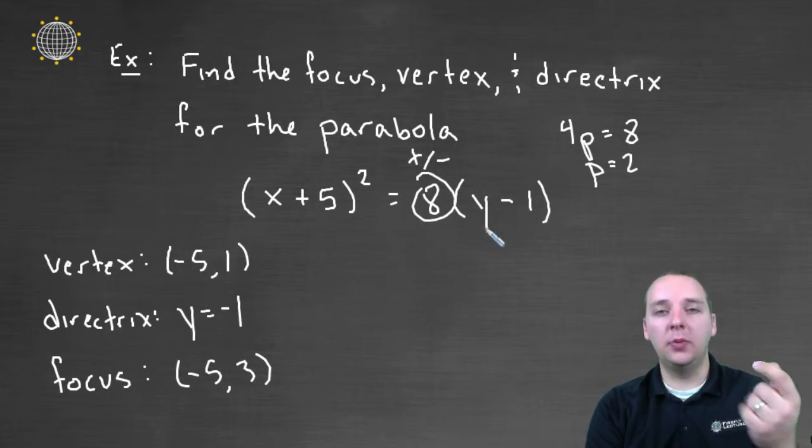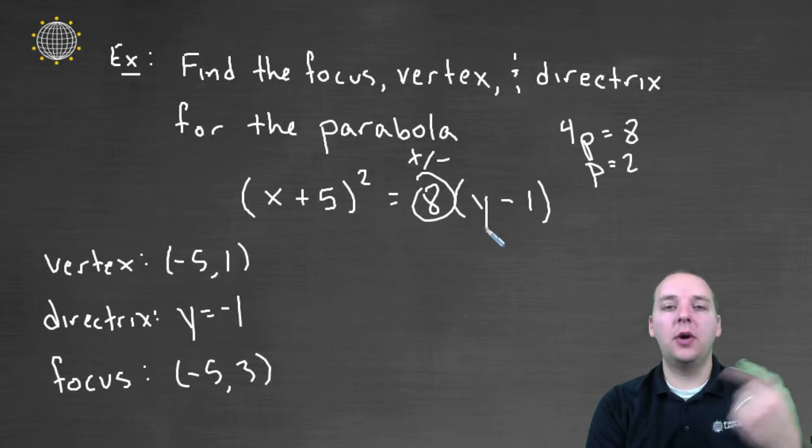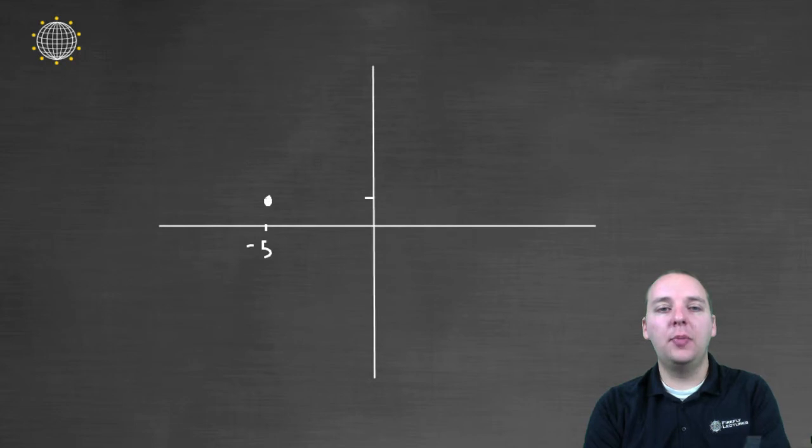If it was negative y, it opened down. If it was positive y, it would open up. Ours is positive, indicating our parabola is going to open upwards through this vertex right here.